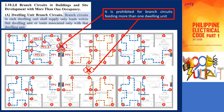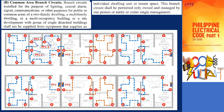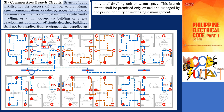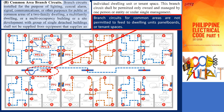Dwelling unit branch circuits are intended to supply power only within or associated with the respective dwelling unit. Furthermore, in the same subsection 2.10.2.8b, it is stated that branch circuits installed for public or common areas, such as lighting, central alarm systems, signal systems, communication systems, or other purposes, must not originate from equipment that supplies an individual dwelling unit or tenant space. For instance, lighting for common areas is not allowed to be fed from a tenant's panel board. These branch circuits for common areas should be independently owned and managed by a single person or entity or under a single management system. This rule is put in place to prevent common area circuits from being affected by the actions of individual tenants or potential non-payment of electric bills, ensuring the reliable operation of essential systems in public or common areas independently from individual dwelling units or tenant spaces.